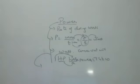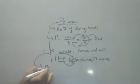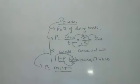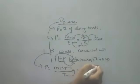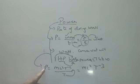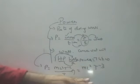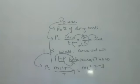Now coming to the dimensional formula. Schools may not cover this, but learning it early helps at the intermediate level. Work has the dimensional formula ML²T⁻². Time is T. Bringing T up gives ML²T⁻³, because T⁻² multiplied by T⁻¹ gives T⁻³. So the dimensional formula of power is ML²T⁻³.